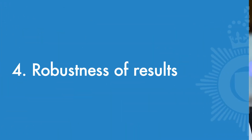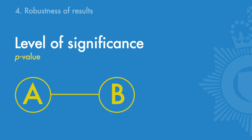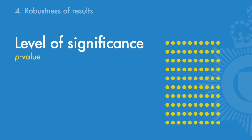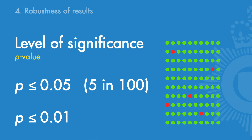Step four is to gauge the robustness of the study's results. To what extent do we believe these results are true in the world and not due to chance? Level of significance, also referred to as a p-value, is the way researchers report whether there's a statistically significant relationship between two variables. Social scientists tend to use p ≤ 0.05 or p ≤ 0.01, which accepts the probability of finding an effect when there isn't one is less than 5 in 100 or less than 1 in 100.